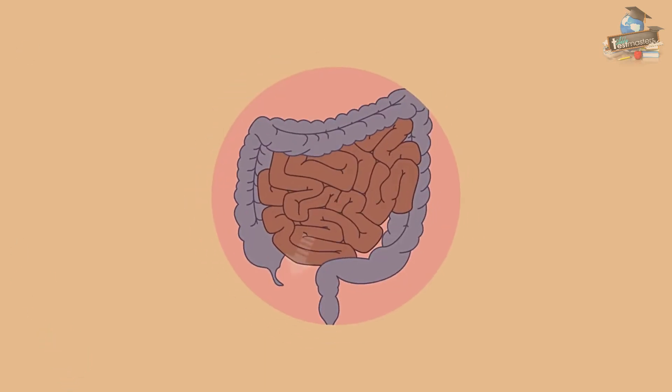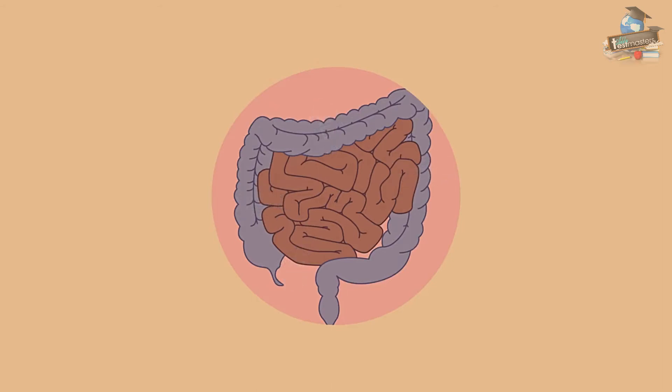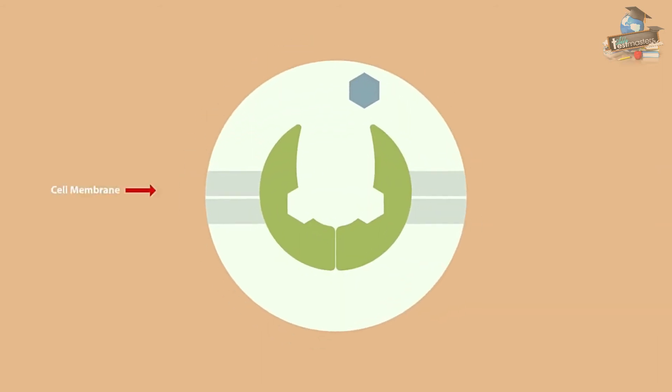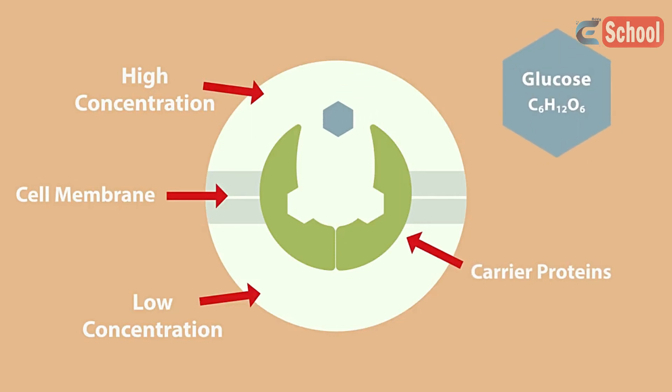How digested foods like amino acids move from the small intestine into the blood also moves by diffusion. You can also have facilitated diffusion where the movement is still down the concentration gradient but special carrier proteins are required to enable the movement. Glucose and ions need carrier proteins to move across the membrane.